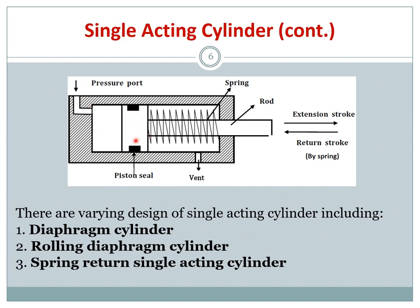Looking at the construction of a single acting cylinder, you have a piston, a rod, a body, and one pressure port. Pressure enters and creates a force, pushing the piston forward and extending the rod. Once pressure is removed, the spring — being a mechanical device — returns the piston to its original position.